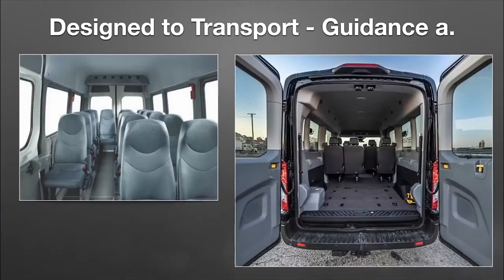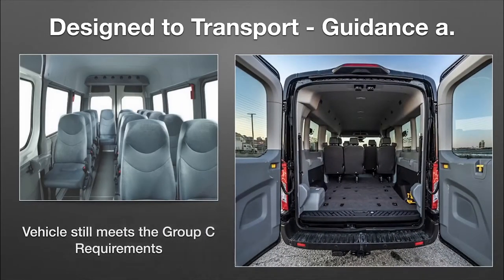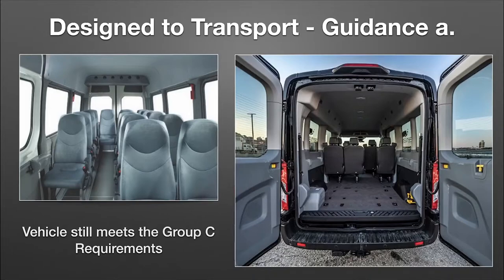When I talk about removal of seats, that vehicle could look something like this — where you pull out those last two rows and get the passenger capacity down below 16 including the driver. However, it's still originally designed to carry that much. Regardless of whether you stack luggage or cargo back there, it is still going to remain a Class C CDL type vehicle based on that definition.